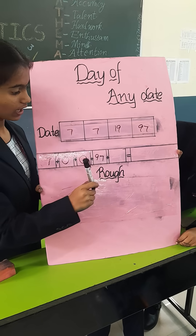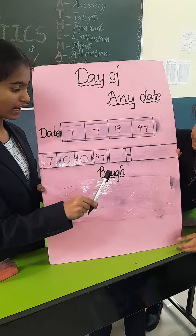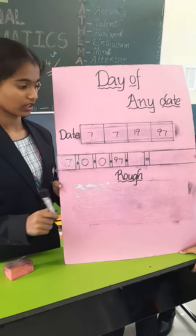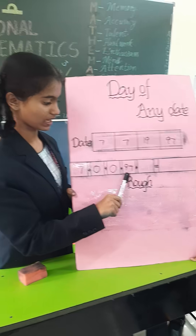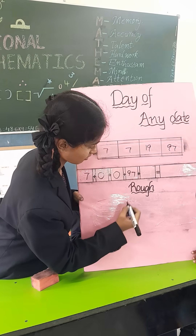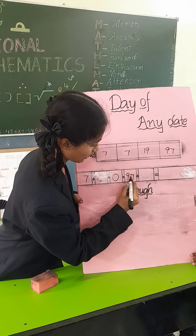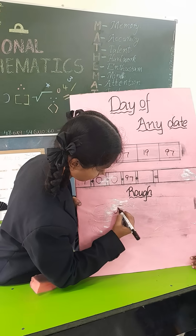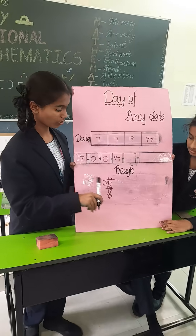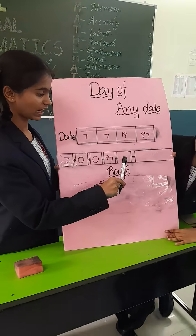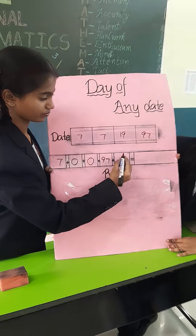Now I am going to divide it by 4 because leap years occur every 4 years. 97 divided by 4 — the quotient is 24. So we have to write 24 here.